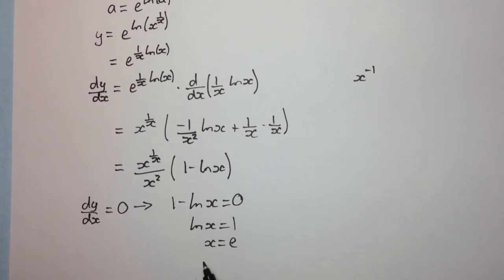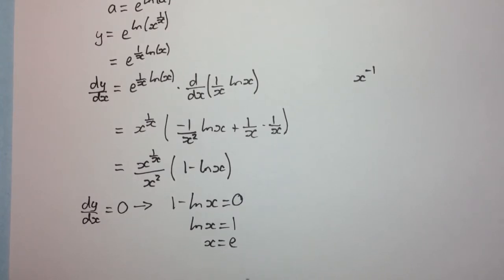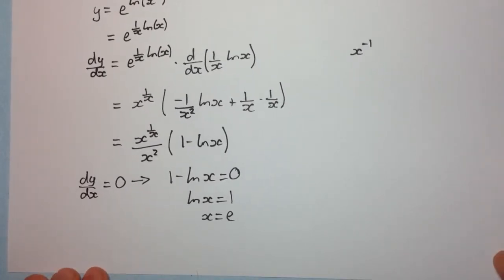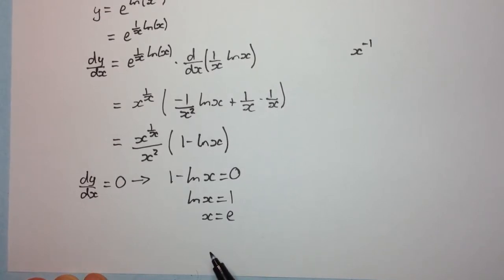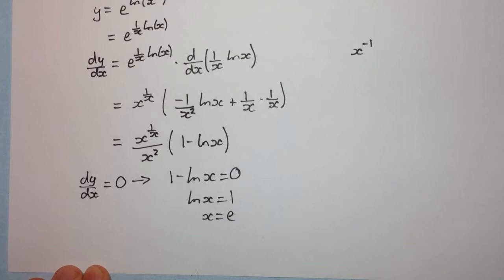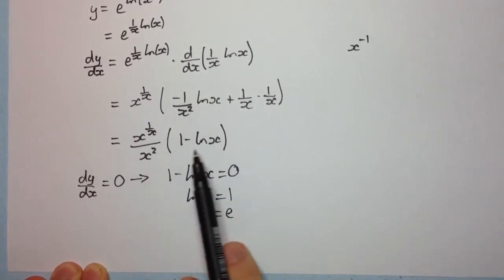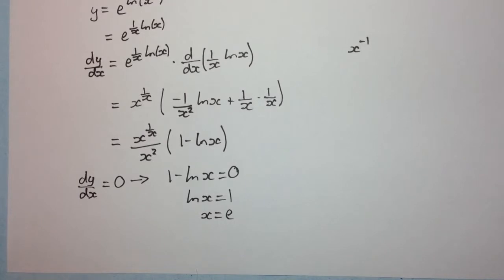So we know that we have a stationary point at x equals e. Now we need to determine whether this is a maximum turning point, a minimum turning point, or perhaps a point of inflection. We can check the second derivative, or we can look at the change of sign in the first derivative. The change of sign method is probably the best approach here, because finding the second derivative of this expression would be quite difficult.